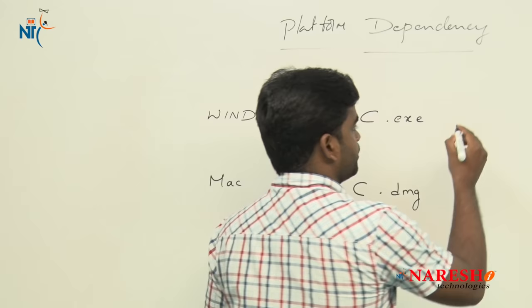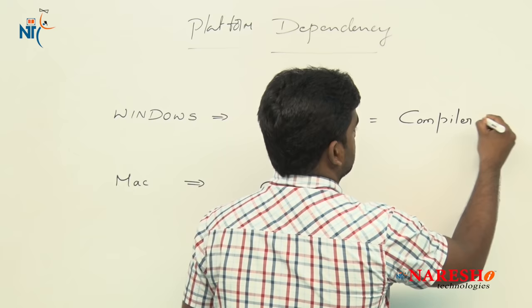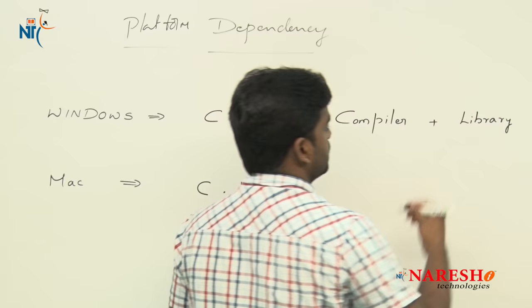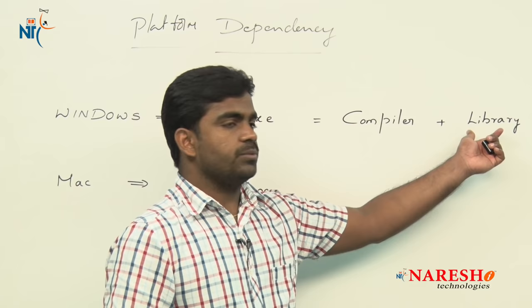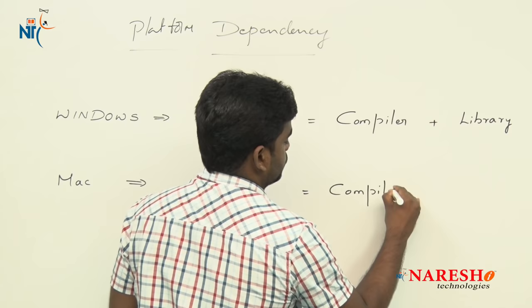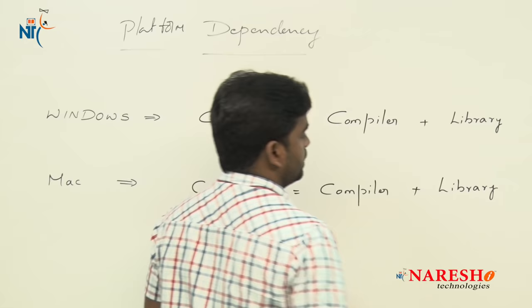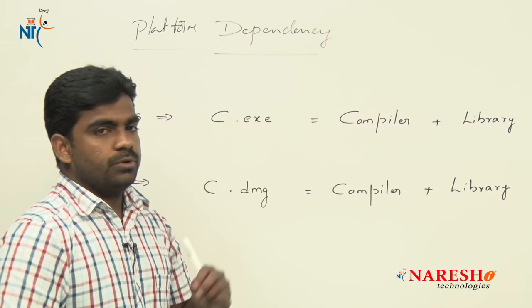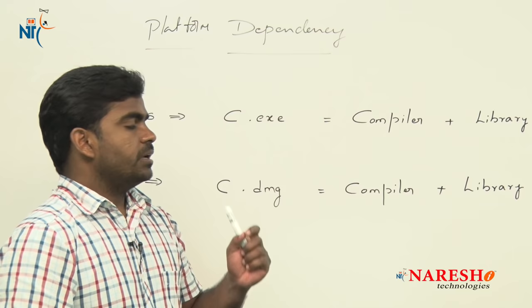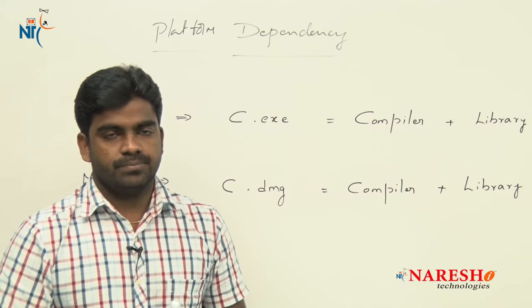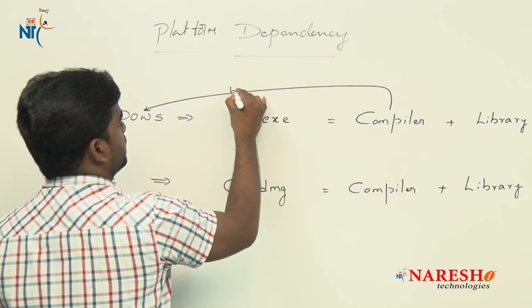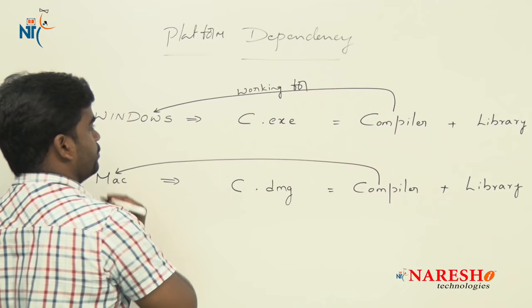Whenever we install C, two important things get installed: a compiler and a library to help develop our application easily. In case of platform dependency, we have to remember one key thing about the compiler — the C compiler works for a specific operating system only. The Windows compiler works for Windows, and the Mac compiler works for Mac operating system only.